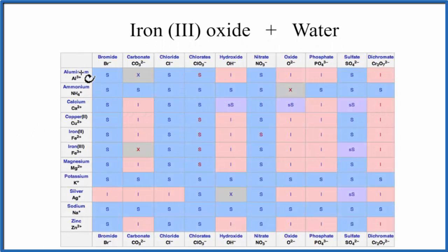So we look at our solubility table. Here we go down, these are the positive ions, the cations. We go down, here's iron three. And then we'll go across here, oxide. And we go down, this is where they meet.